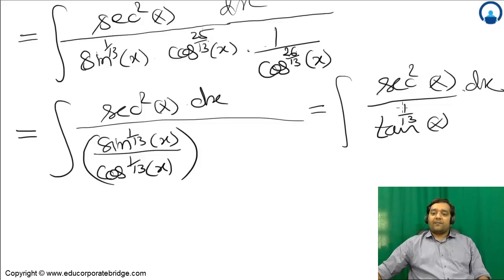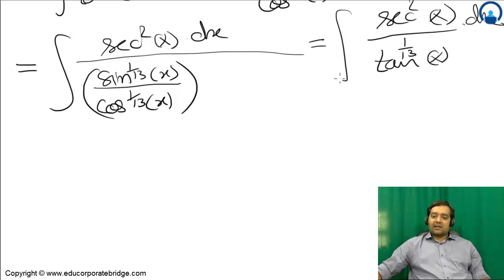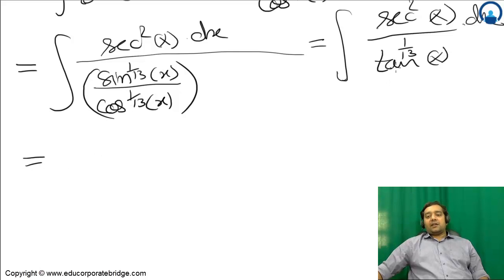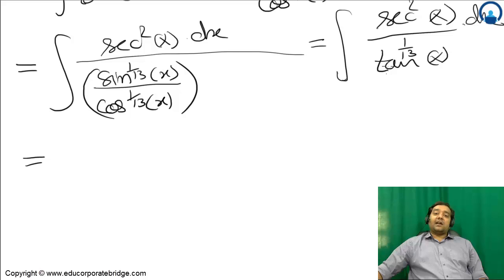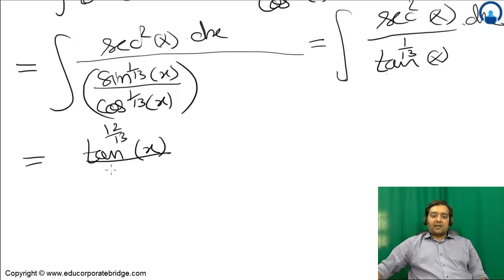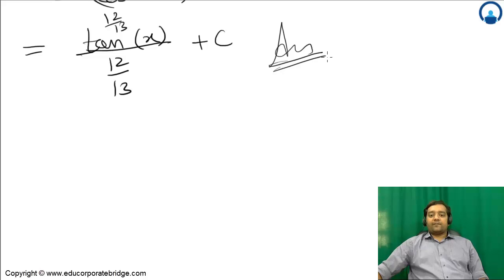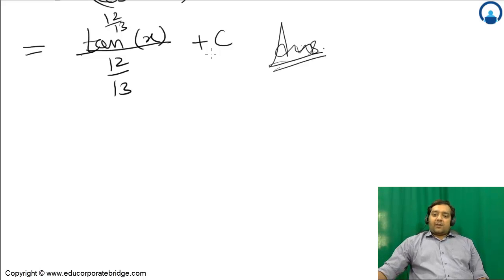Now the entire expression is converted into terms of tan(x). Let tan(x) = t, so sec²(x) dx becomes dt. This becomes integral of t^(-1/13) dt. Adding 1 to the exponent: -1/13 + 1 = 12/13. So the answer is tan(x) raised to power (12/13) divided by (12/13) plus c.